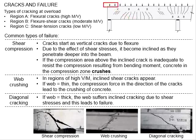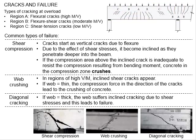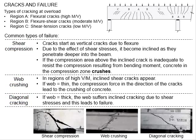For a continuous beam member, particularly at the interior support, regions A, B, and C are indicated. The appearance of cracks indicates potential overloading of the member and signals the possibility of failure. If the problem is not remedied, the worst-case scenario will be failure of the member. The common types of failure include shear compression failure, web crushing, and diagonal crushing. Let us first look into the shear compression failure.